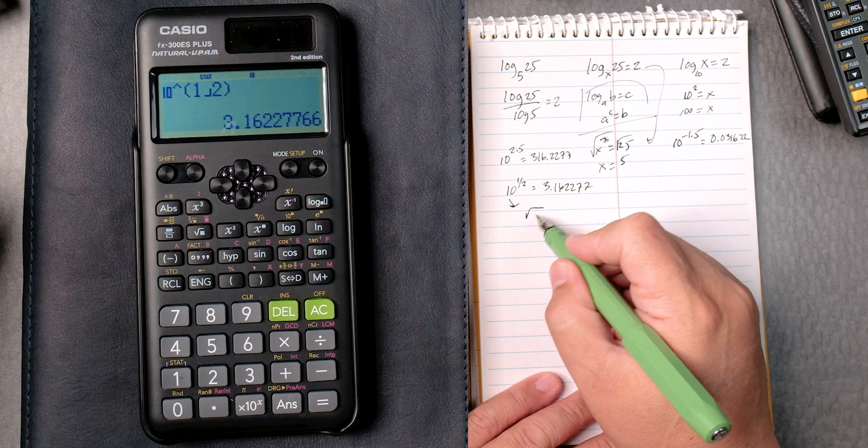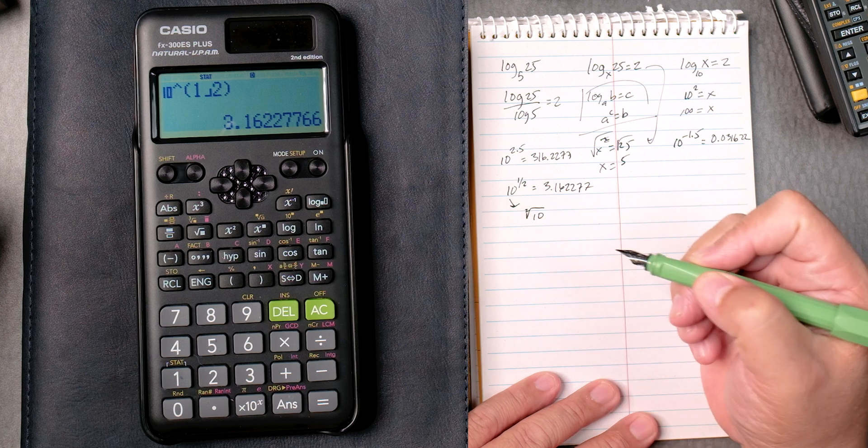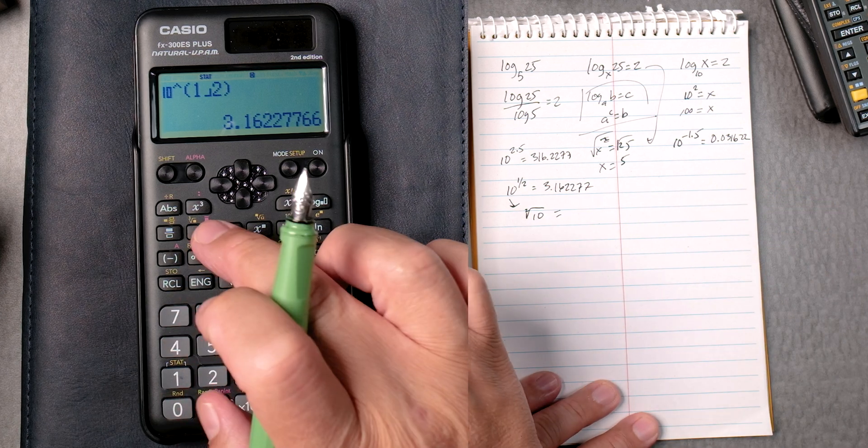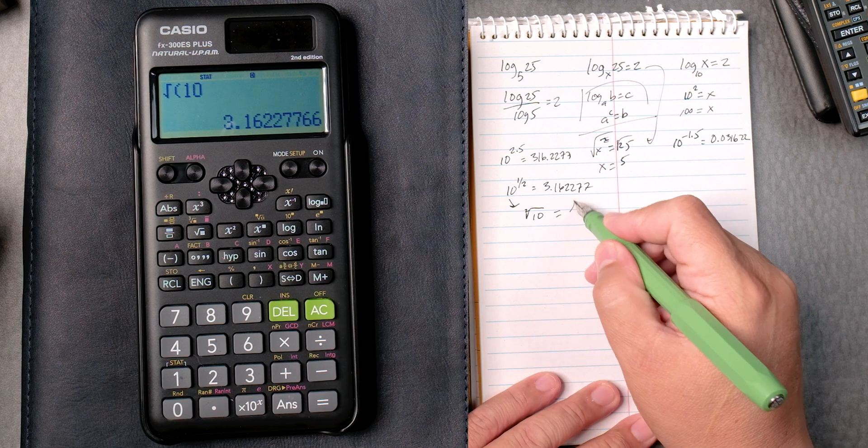This, by the way, is the square root of 10. This 2 is the index of 2. So if we take the square root of 10 and we press enter, it gives you the same answer.